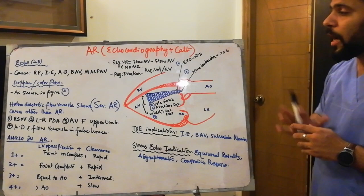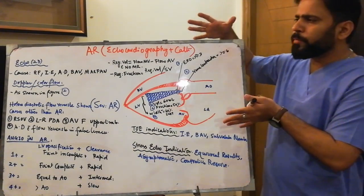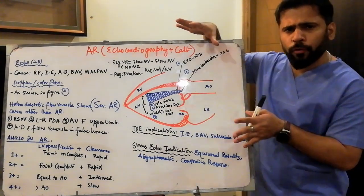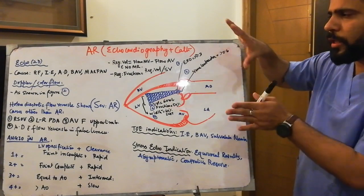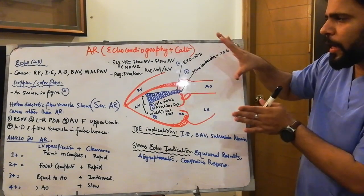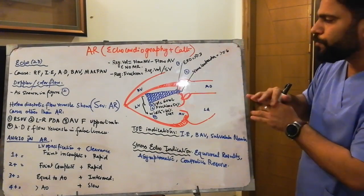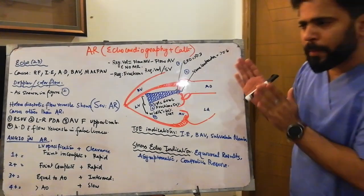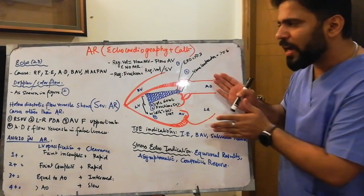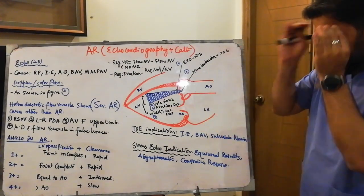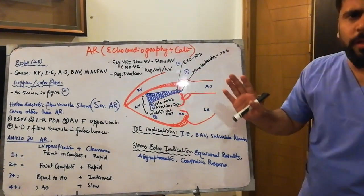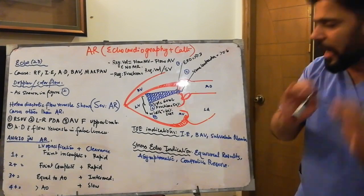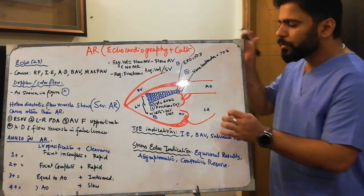So the echocardiographic findings in AR are not difficult. Just learn by heart these five to six parameters — keep them in mind and the echocardiography of AR is complete.